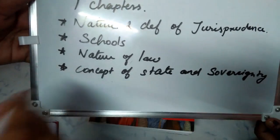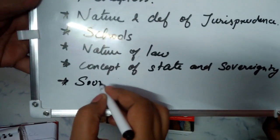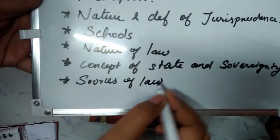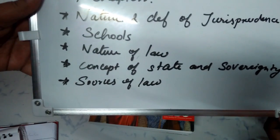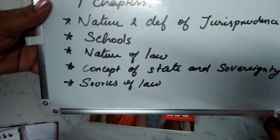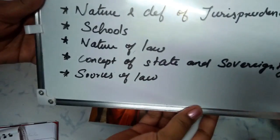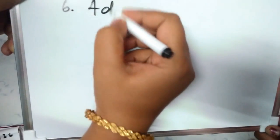The fifth chapter is sources of law, which has three divisions: Legislation, Precedent, and Customs. That covers all the details of those chapters. The sixth chapter is administration of justice.